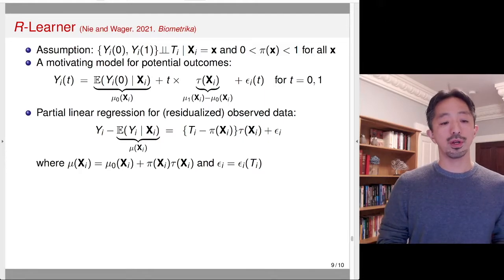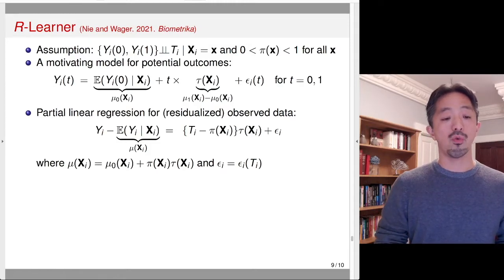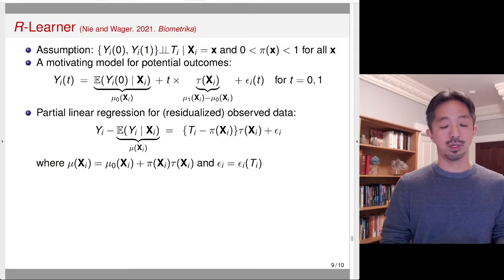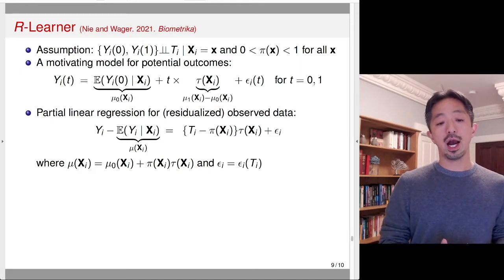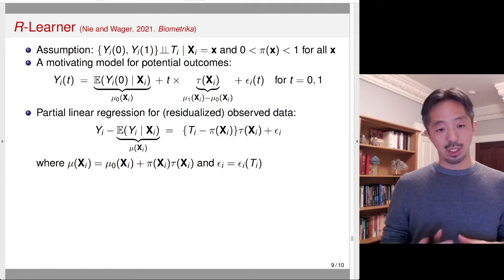From this, we can write down the partial linear regression for residualized observed data. We compute the residual of the outcome — Y_i minus the expected value of Y_i given x_i — which is the regression of y on x. We subtract from the observed data the μ(x) regression function, where μ(x) does not have a treatment subscript since it is the regression of outcome on covariates without treatment. On the right-hand side, we have the residualized treatment: T_i minus π(x_i), the treatment variable minus the propensity score. So essentially, we're regressing the residual of the outcome on the residual of the treatment.